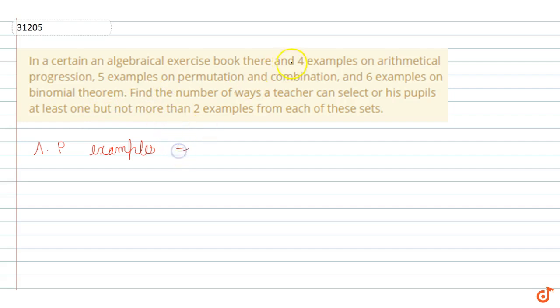For arithmetic progression there are four examples, so either we can choose one or we can choose two. Similarly, if we look at permutation and combination examples, there are five total. From five we can either choose one or choose two.